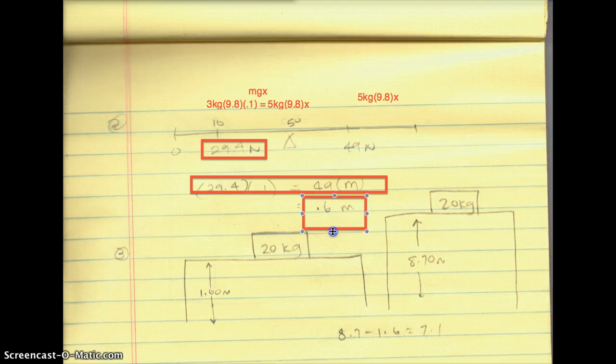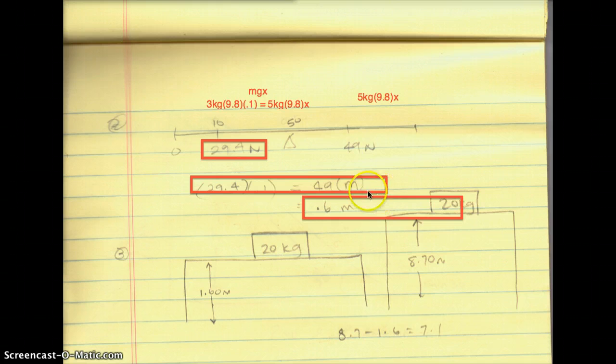So you can convert it to centimeters if you'd like to. If they ask you to put it in centimeters, then it will be 60 centimeters on a 1 meter stick. So your final answer would be 0.6 meters, or 60 centimeters. Okay, so that's problem number 2.